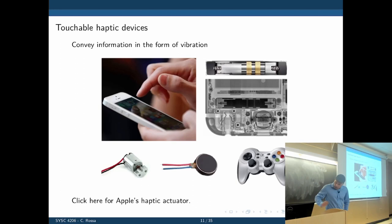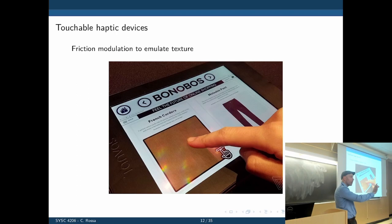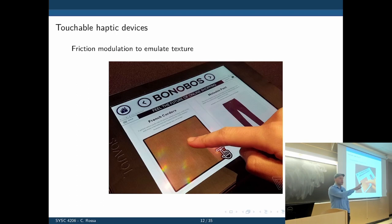One thing we could do with those vibration actuators is emulate texture. What is the perception of texture if not simply putting your hand on something and perceiving the vibrations created by sliding your hand at a given frequency? If you can detect that frequency and the position of the finger, perhaps as you slide your finger on a virtual surface, you could potentially feel the texture of whatever you're trying to emulate.